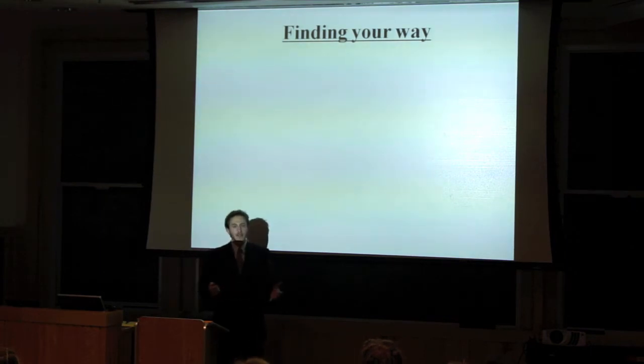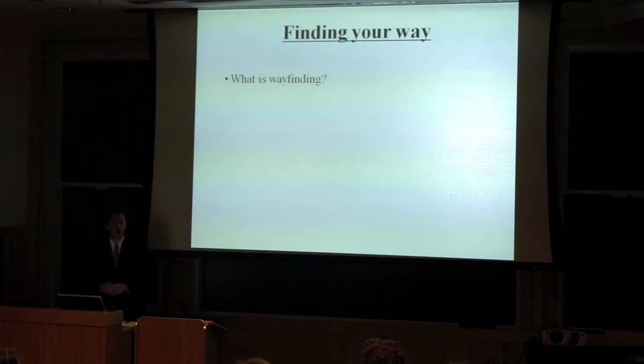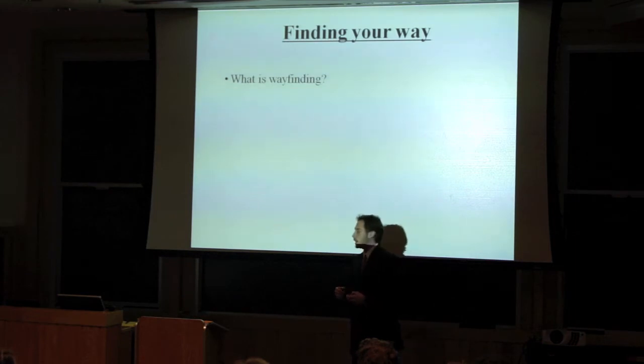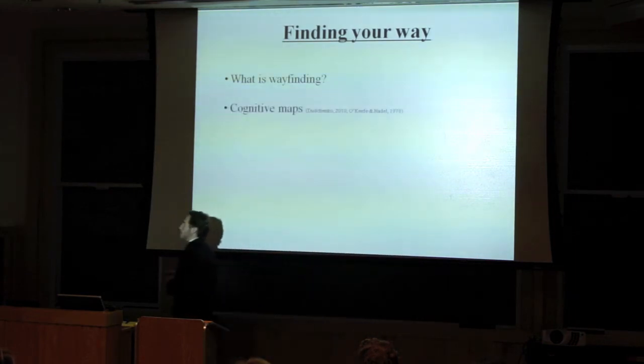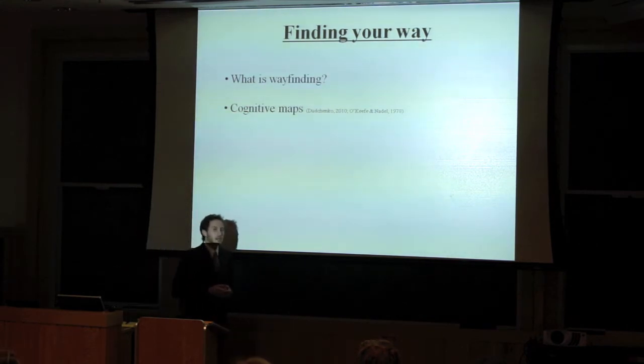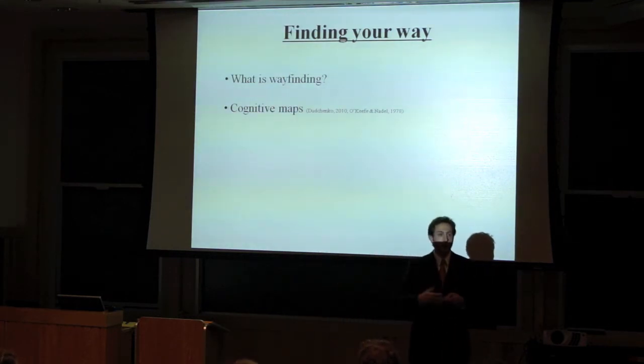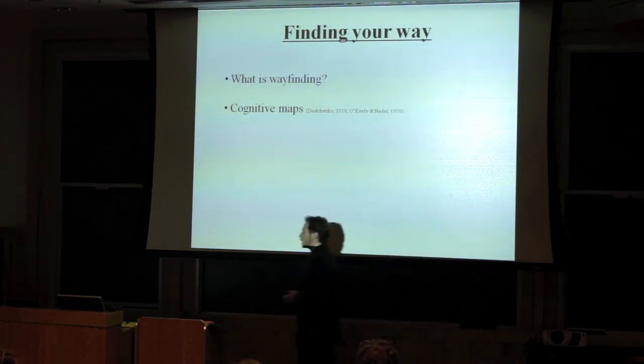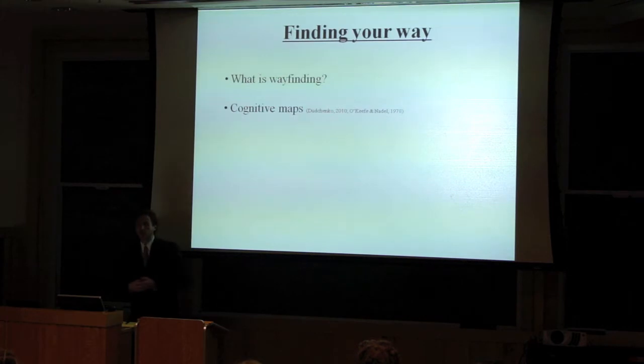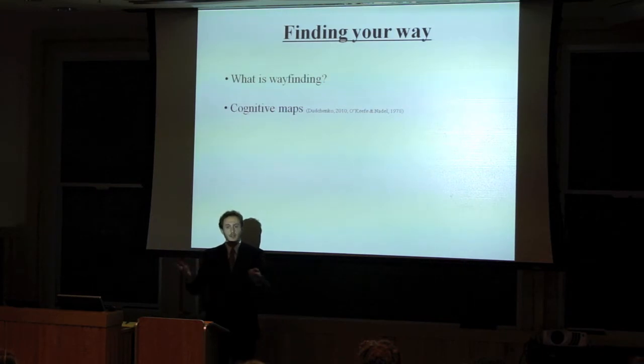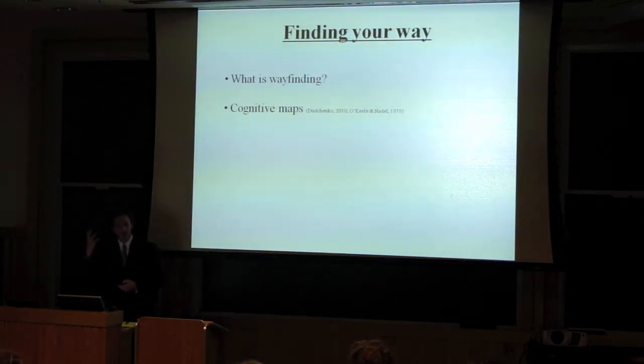So what is navigation? Wayfinding, in its most general terms, is the ability to conceptualize your current location in space, conceptualize another location that you wish to attain, and then conceive of some way of getting between those two locations. The literature has demonstrated that in both animals and humans, it is possible to develop an actual cognitive map, a mental representation of the physical environment. This is in opposition to the idea that we find our way by using discrete steps, like go to the tree and then turn left.